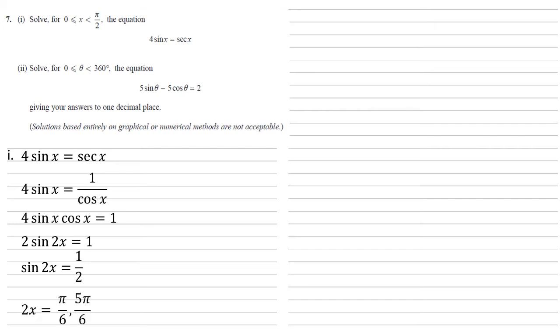So 2x must equal pi over 6 and 5 pi over 6. Dividing by 2 gives us answers of pi over 12 and 5 pi over 12.